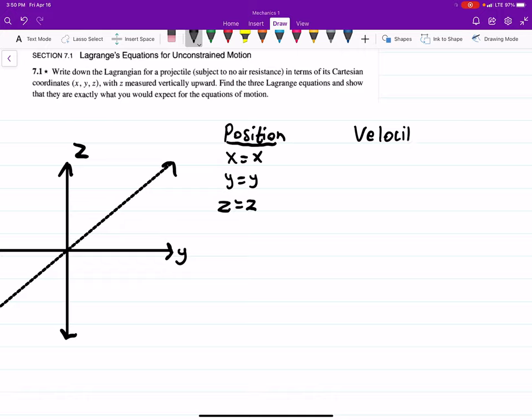And velocity, well, velocity is the derivative of position. So X-dot equals X-dot, Y-dot equals Y-dot, Z-dot equals Z-dot. So those are our time derivatives.